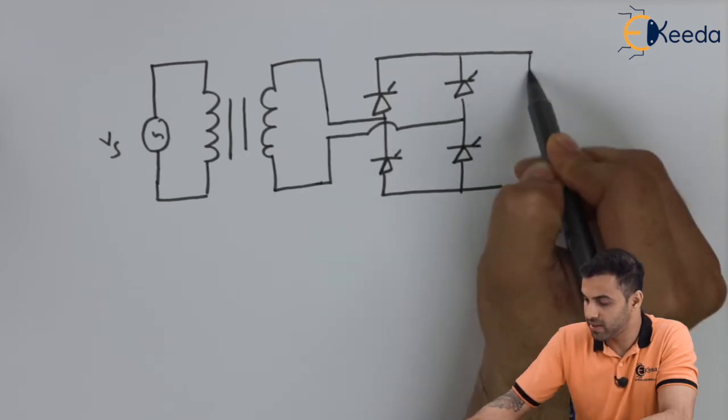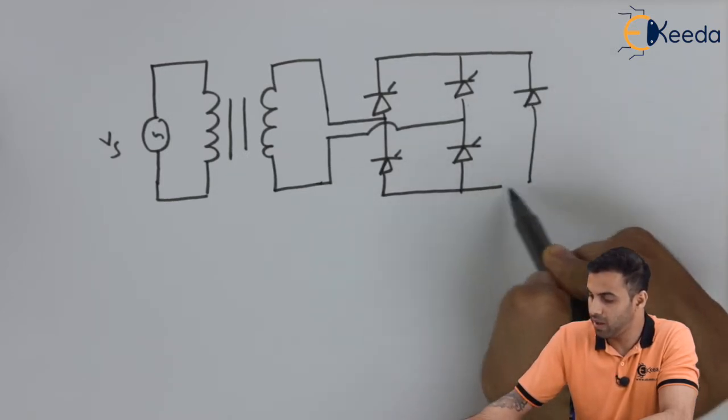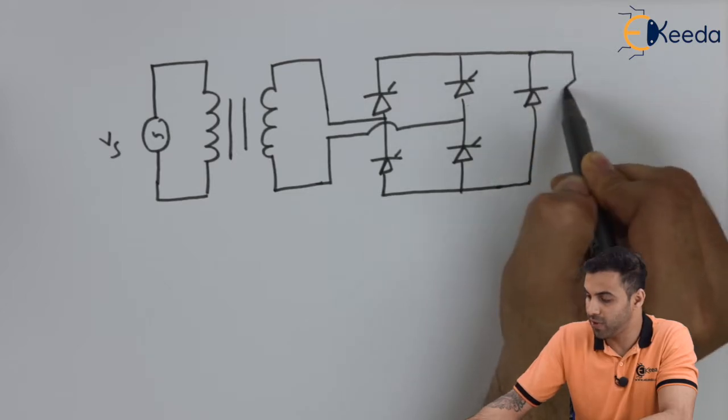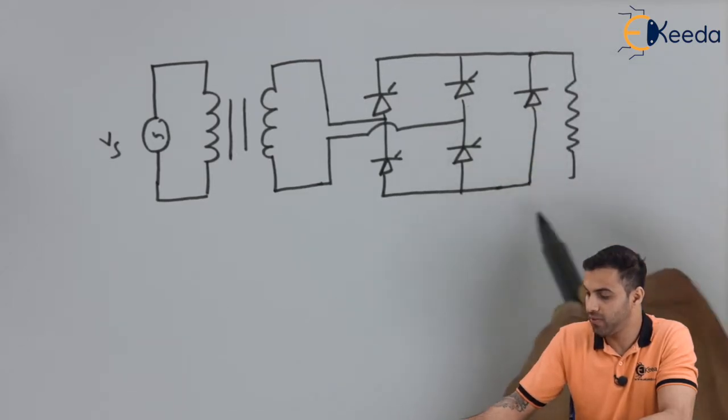Let's say this is a freewheeling diode and I'm connecting a resistive load across the output.